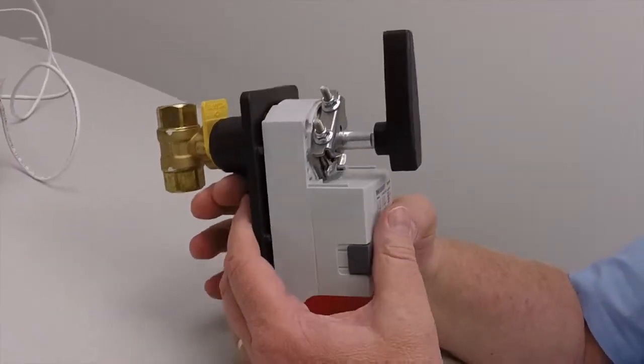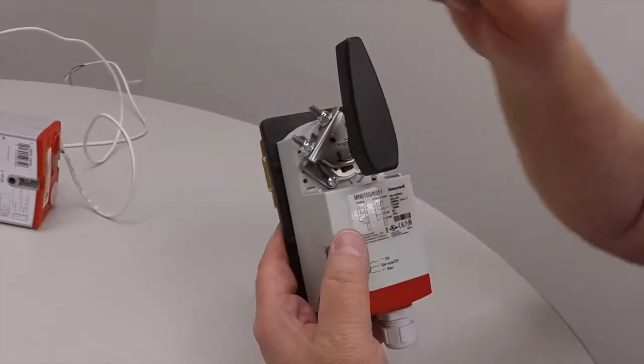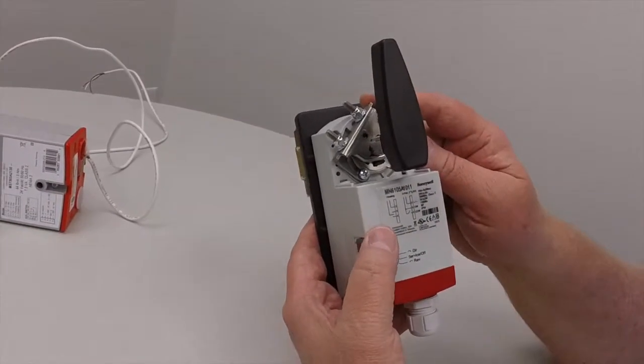So if you have it full open, what you want to do is make sure that the knob is turned in that position and then you would tighten the actuator down.